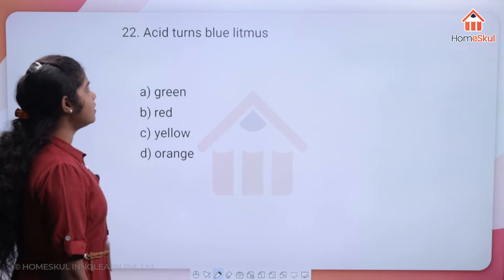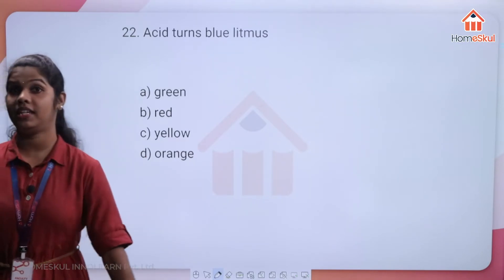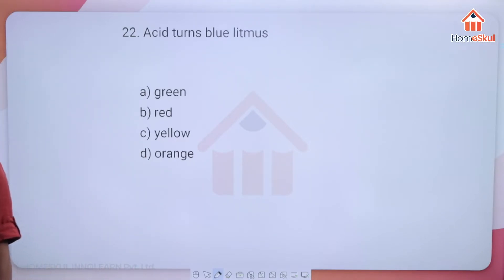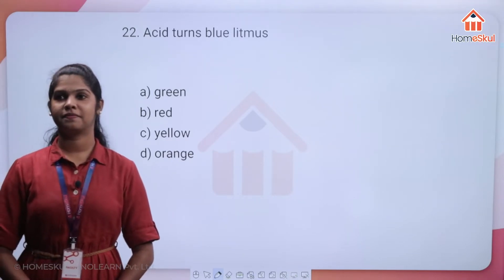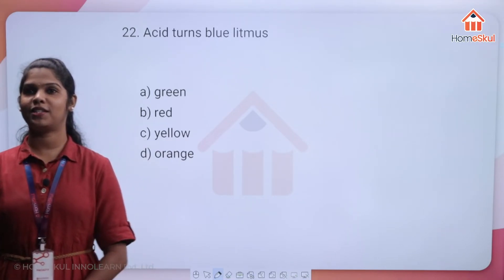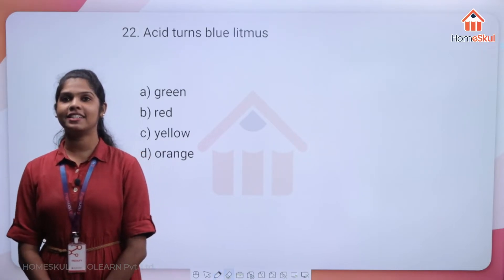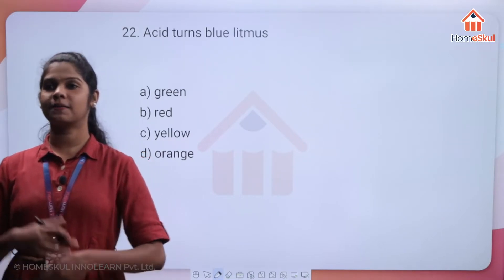Question 22: acid turns blue litmus — green, red, yellow, or orange? This is a very easy question.